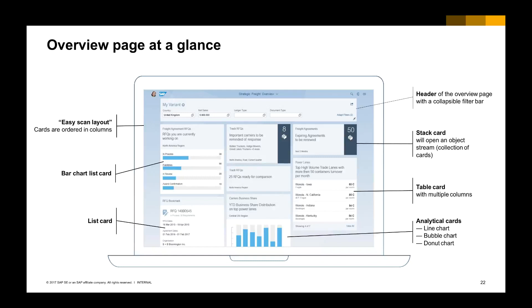Here is an example of the Overview Page. In the header, you have a smart filter bar, which the end user can customize for filtering. You can also see several kinds of cards: stack cards with a number or collection, a table card with multiple columns, an analytical card with a line chart or bubble chart inside, and a list card showing a list of records.